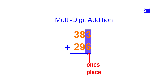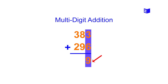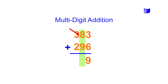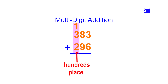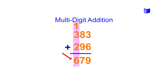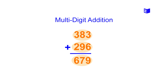We perform addition for each column, starting with the ones column: 3 plus 6 equals 9; we put 9 below the horizontal line. For the tens column: 8 plus 9 equals 17 — the 7 stays in the tens column below the horizontal line, and the 1 carries up to the hundreds column. For the hundreds column: 1 plus 3 plus 2 equals 6; we place 6 below the horizontal line. We conclude that 383 plus 296 equals 679. Through these examples we have understood the addition of multi-digit numbers.